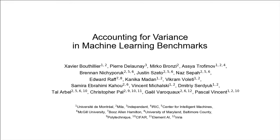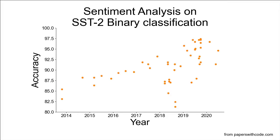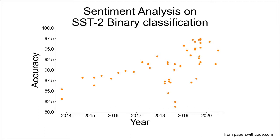Accounting for Variants in Machine Learning Benchmarks. Benchmarks are one of the driving forces for the progress in machine learning research. We have here results on SST-2 binary sentiment analysis from Papers with Code. Throughout the years, new methods are published with their accuracies on a set of benchmarks. Some of them mark new state-of-the-art and drive the progress further. Or do they?